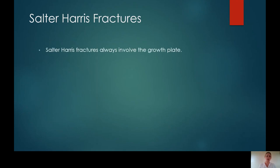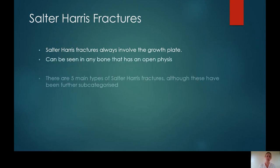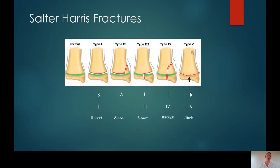Salter-Harris fractures are paediatric specific fractures and they will always involve the growth plate. There are five main types, although these have been further subcategorised. Some of the Salter-Harris fractures can't be appreciated on x-ray. There's a nice mnemonic to remember the classification: SALTER corresponds to types 1 through 5. S for a slipped epiphysis, type 1; A for a fracture above the growth plate, type 2; L for a fracture below the growth plate involving the epiphysis, type 3.